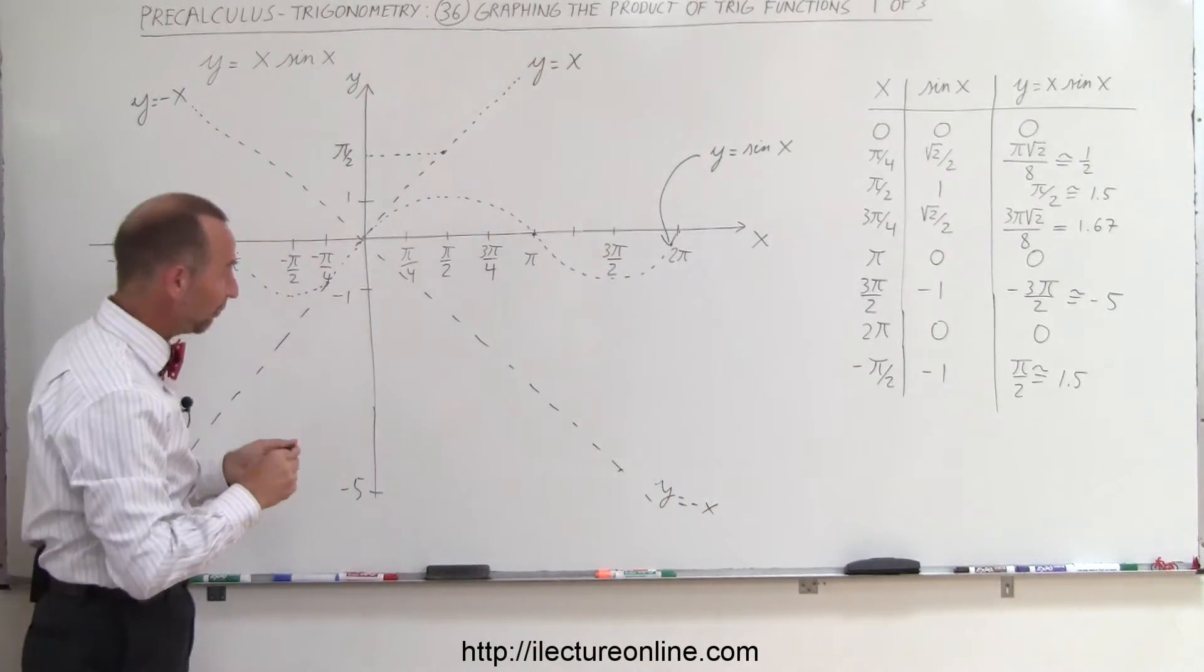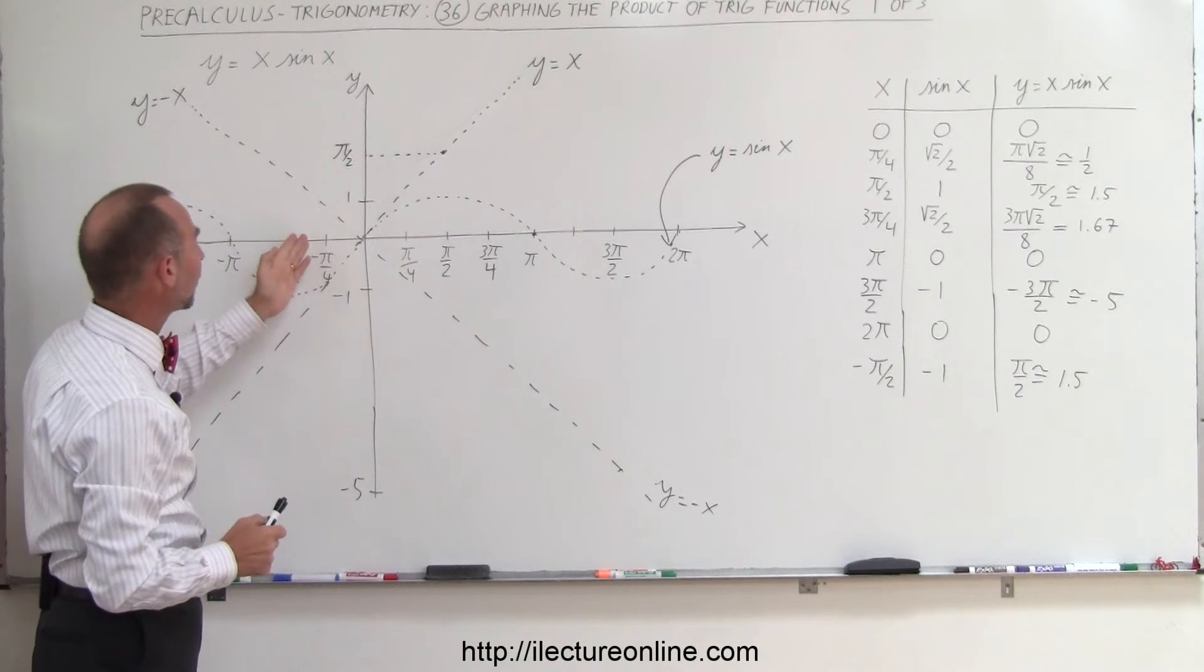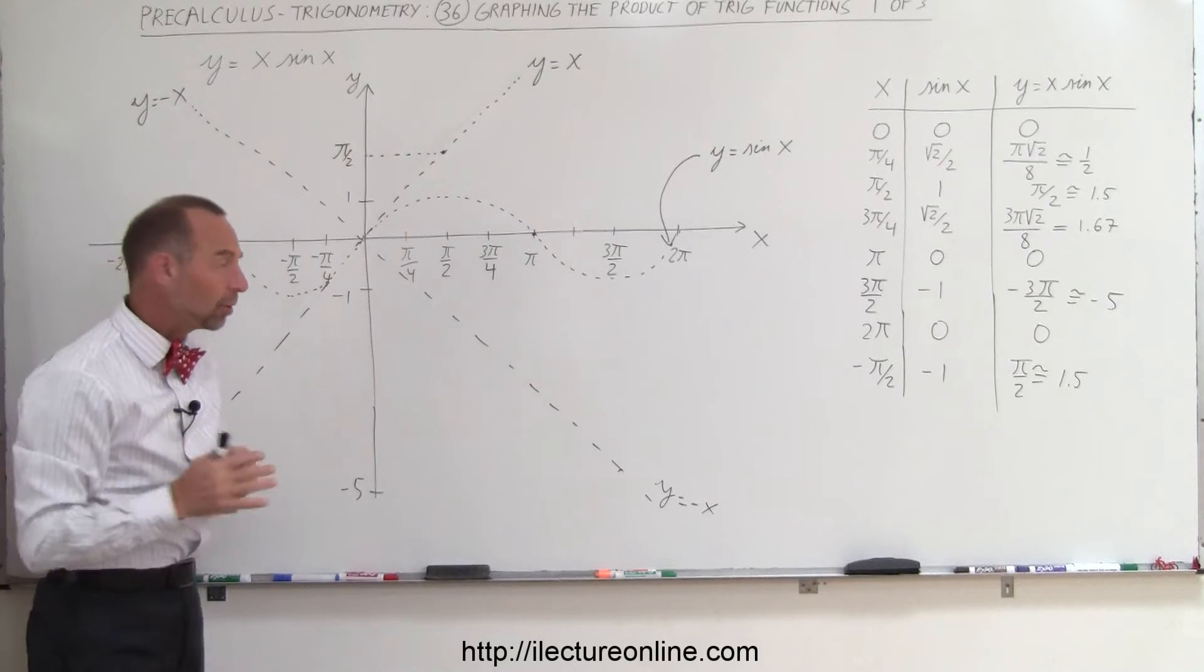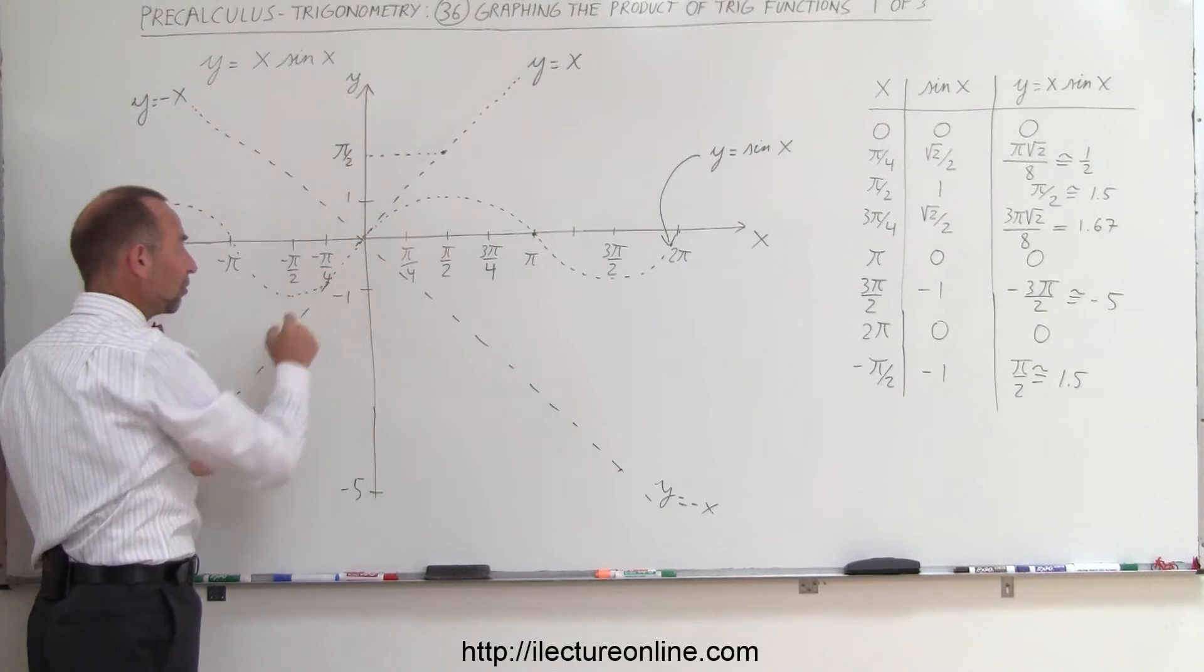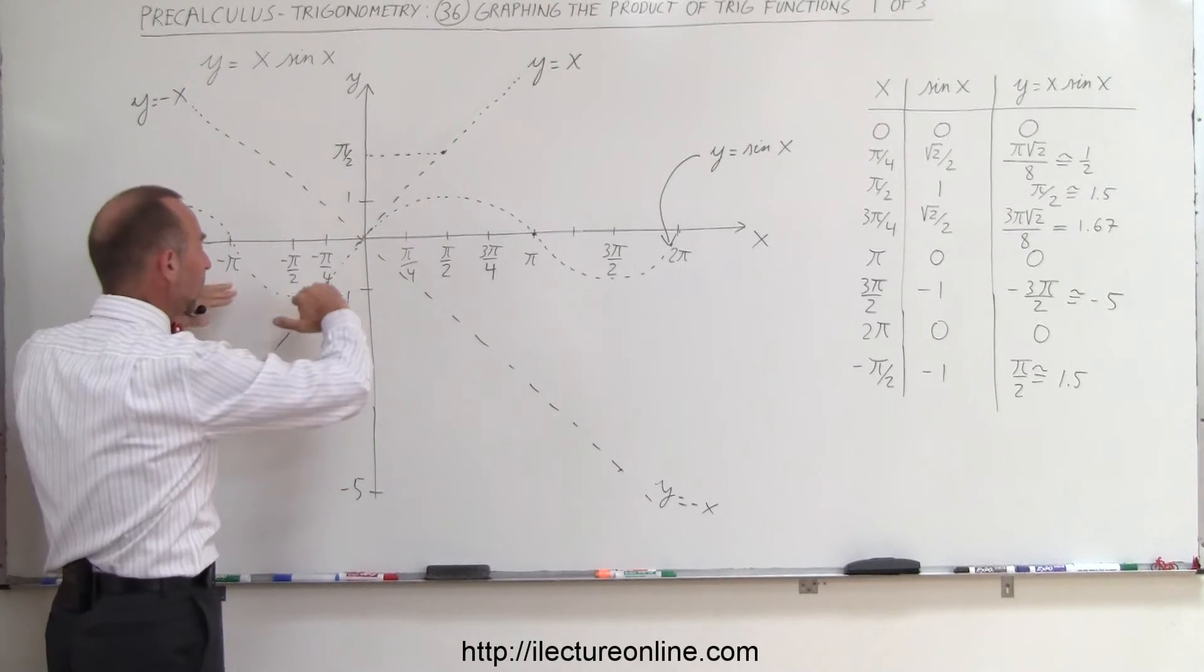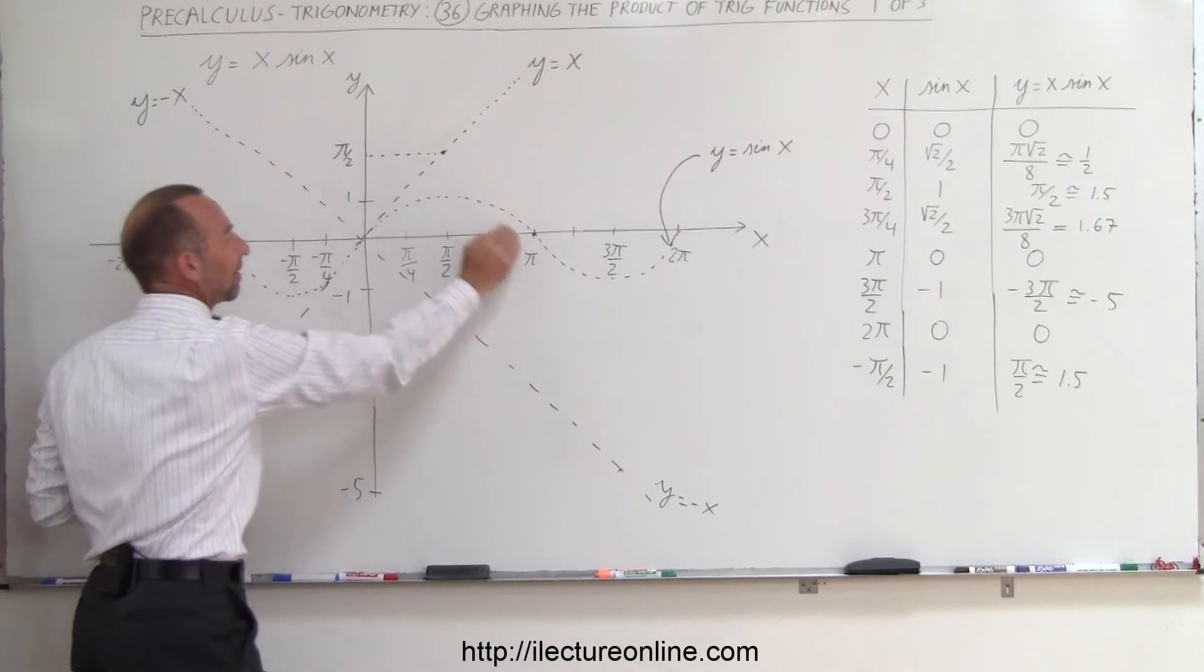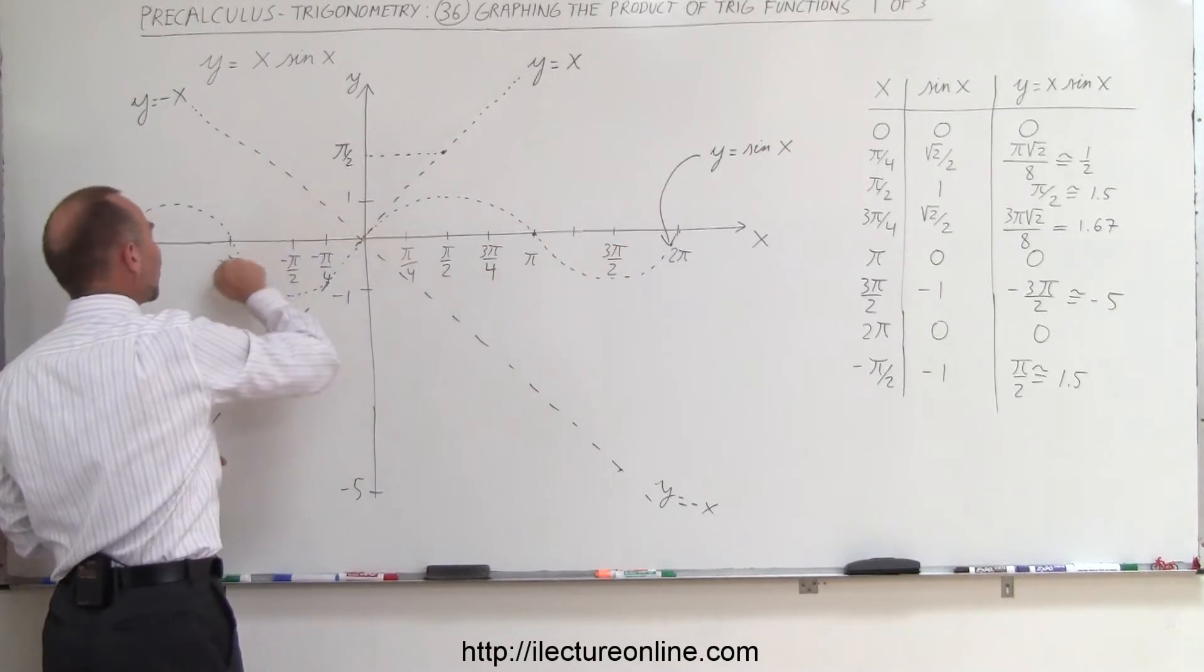Now, on the negative side, we have to be careful, because now we have negative values for x multiplied by our normal sine function. So when we multiply the value of the sine function by a negative x, it will flip the function over, and so we basically have this side repeated on the other side like that.